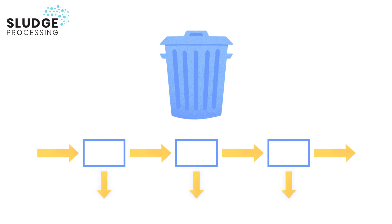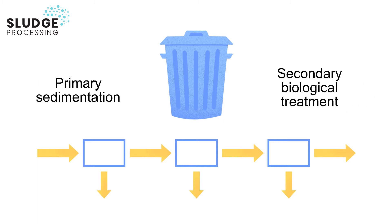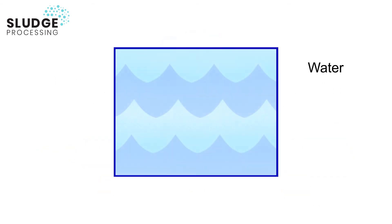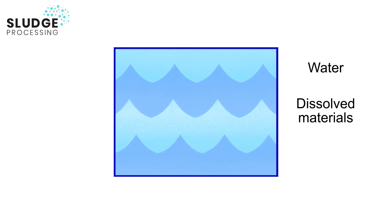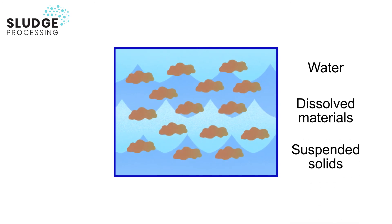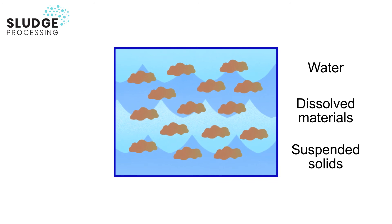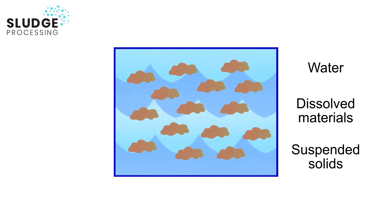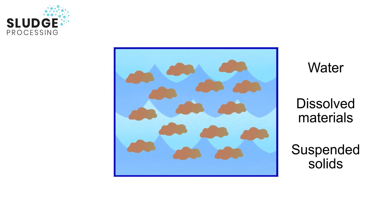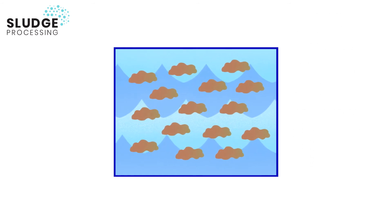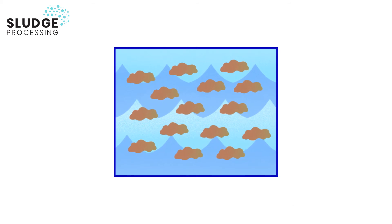Different sludges are produced from different operations along the process treatment scheme. For conventional sewage treatment, the two main sludge streams are from the primary sedimentation and secondary biological treatment steps. In all cases though, the sludges contain water, dissolved materials and suspended solids. The solids are predominantly organic if it's a wastewater sludge, and the suspended solids make up anything up to around 5% of the sludge.